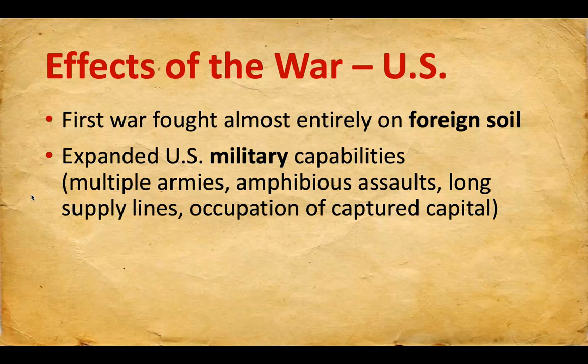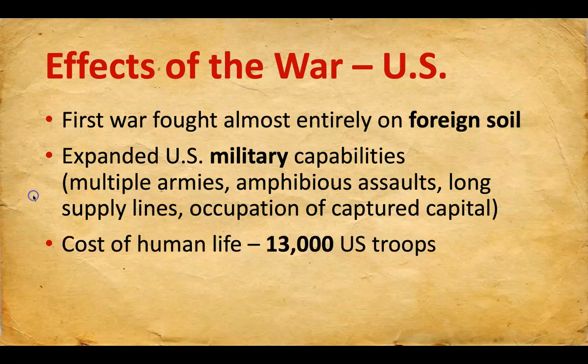You had long supply lines — when you have soldiers deep in enemy territory, you need a way to get them supplies like food, ammunition, and medical needs. The U.S. also occupied for a short time the capital of Mexico, Mexico City. The cost of human life for the U.S. was about 13,000 troops.